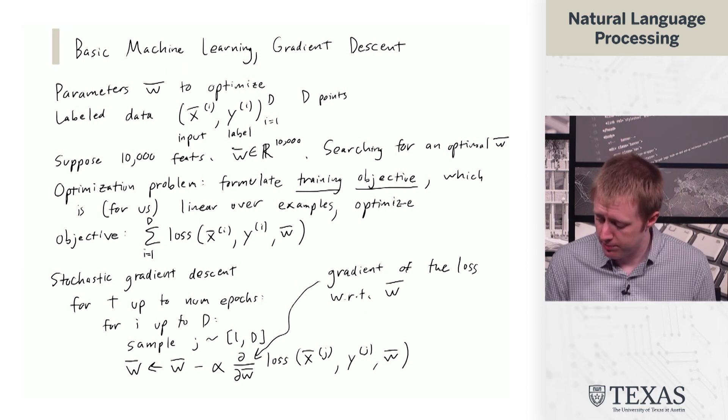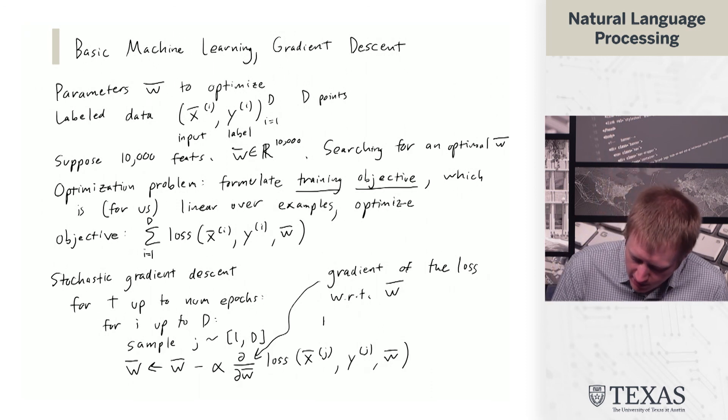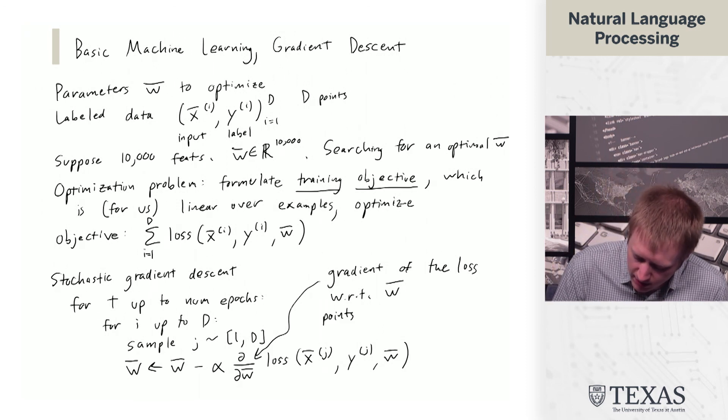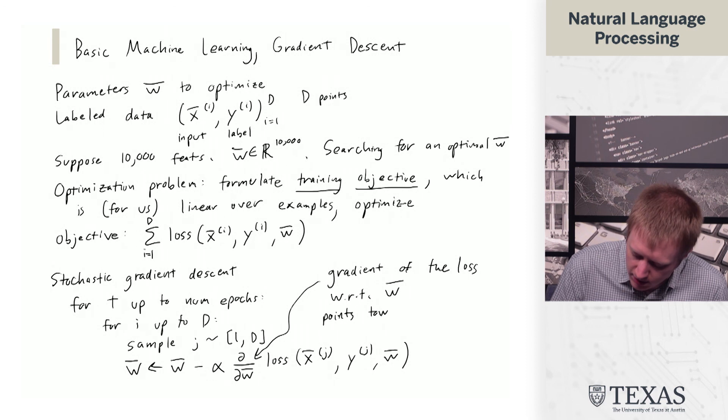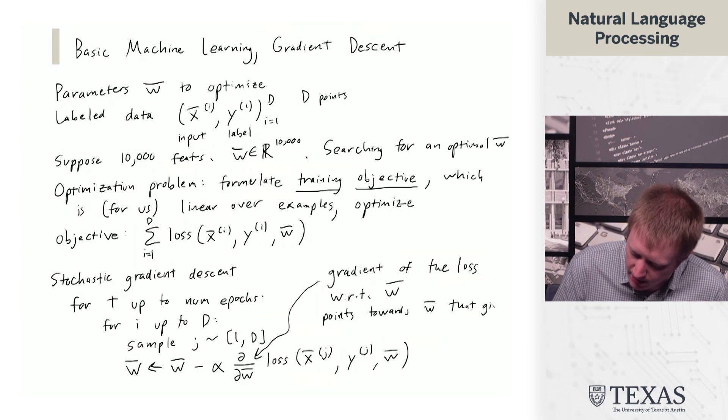So what this basically is, is this points towards W that give higher loss.